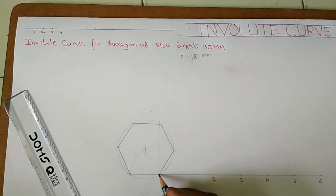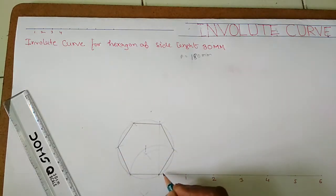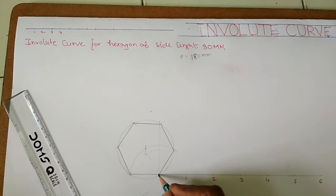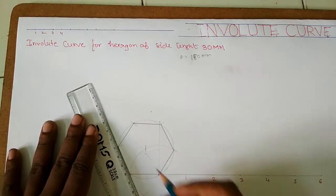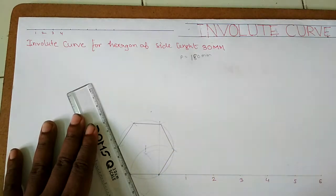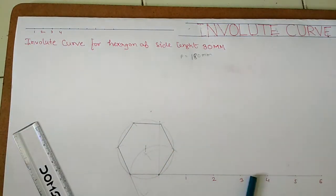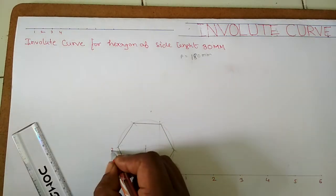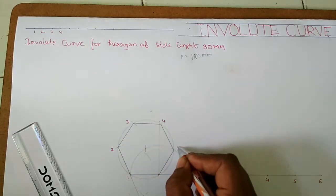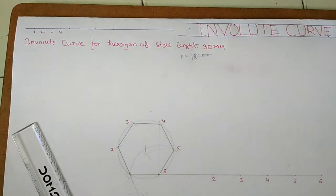Suppose the involute string is wrapped in this fashion, with one end fixed and the other open. When we open it, the end point will trace a curve — that is what we have to find. In the first case, we need to draw the tangent. We will mark the vertices as 1, 2, 3, 4, 5, and 6.